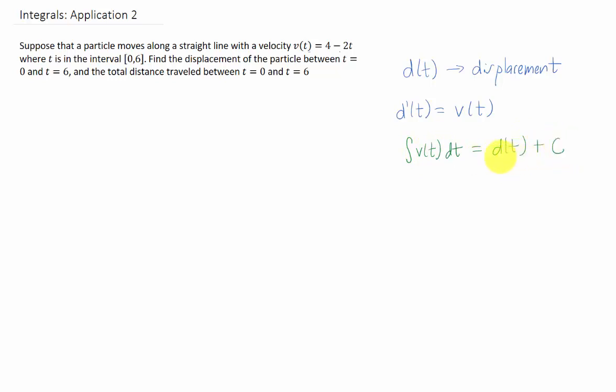And if we want to find the total displacement of a particle between two specific values of t, we can use a definite integral. And this is the one that we're going to use to find the first part of the question, the total displacement of the particle between t equals 0 and t equals 6.